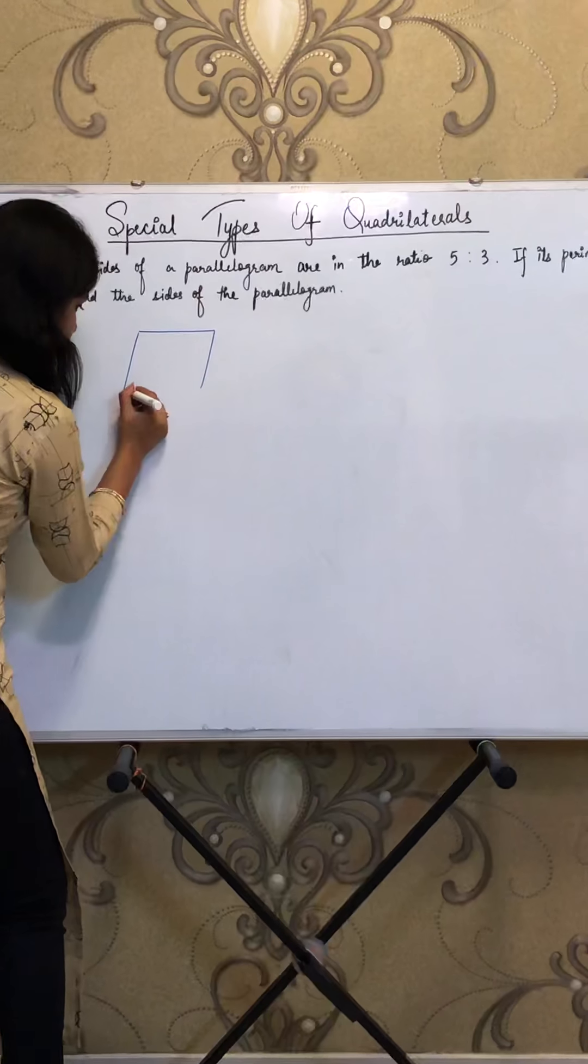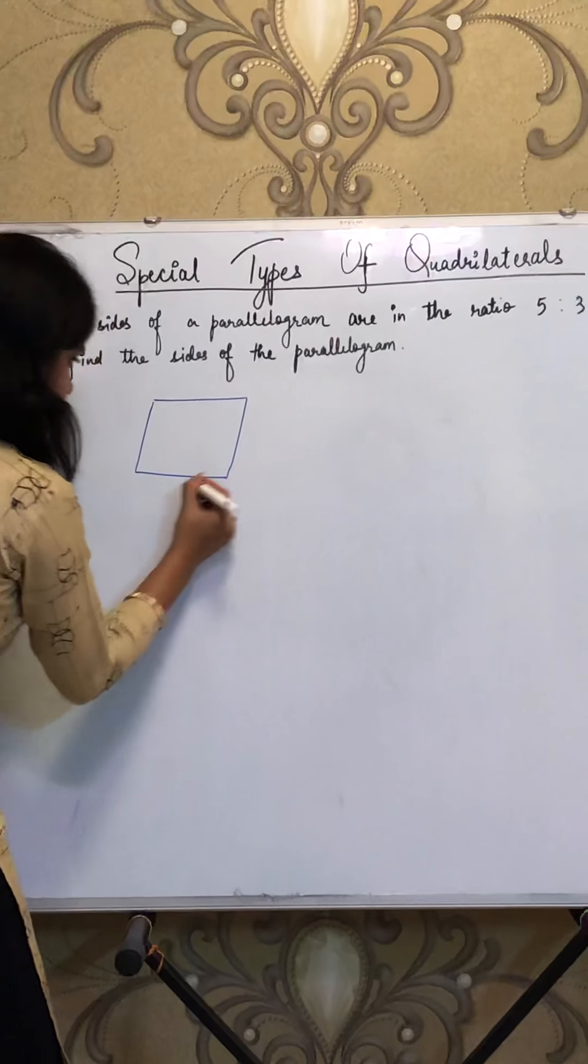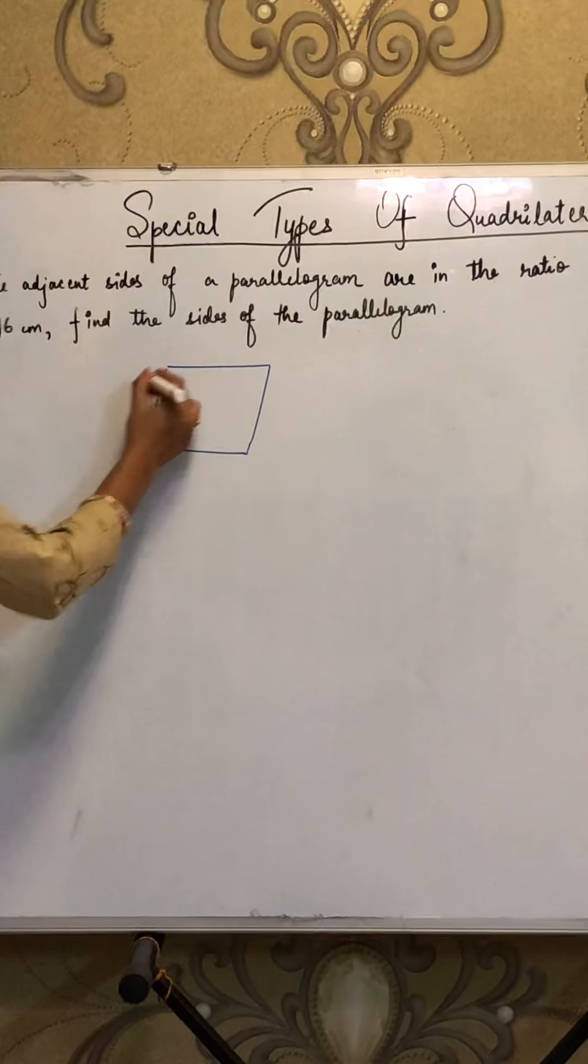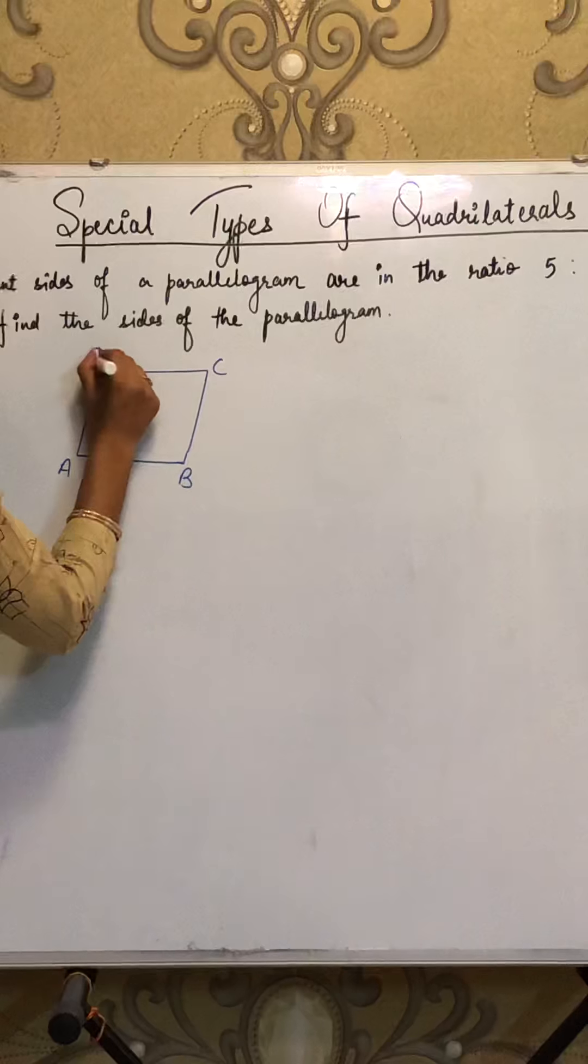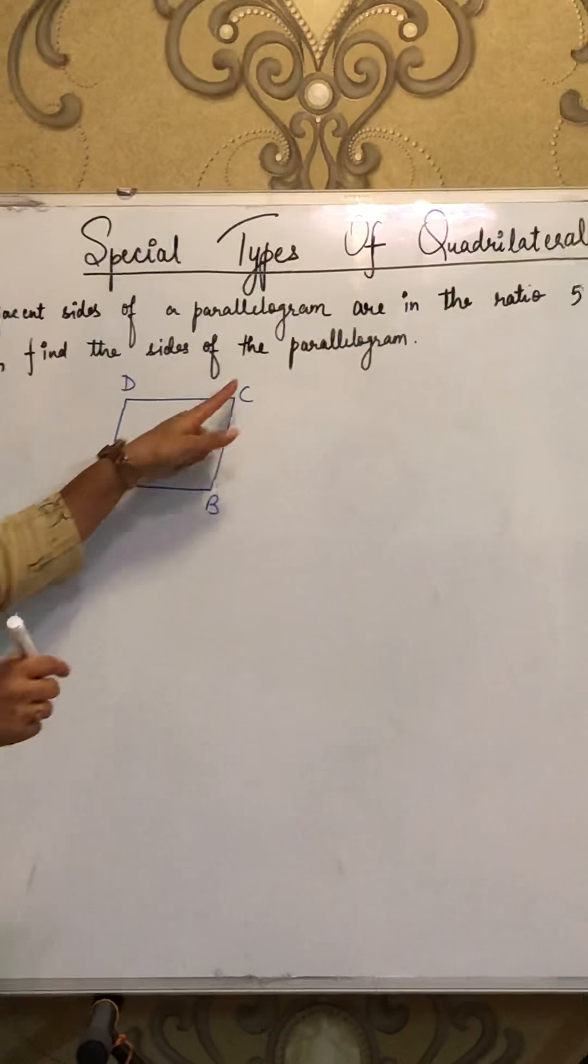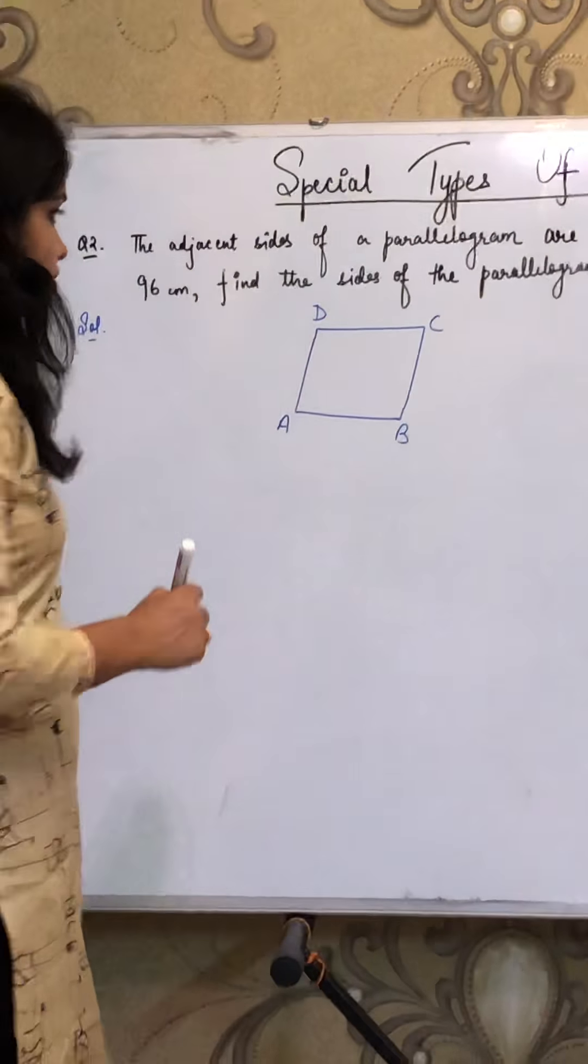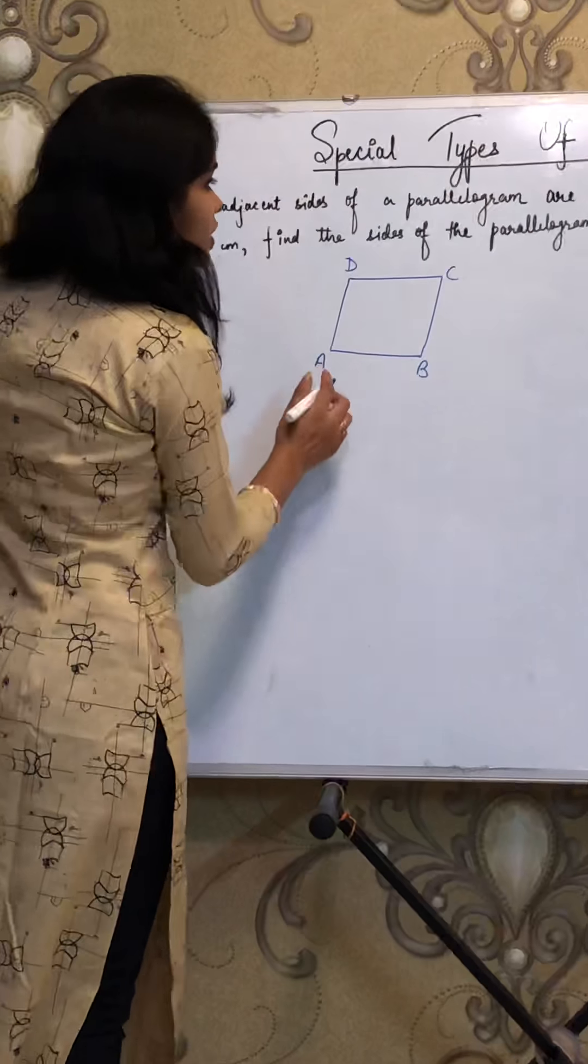So this is my parallelogram and here I am naming the parallelogram like A, B, C, D. And remember students, the naming should be in consecutive order. Parallelogram A, B, C, D.